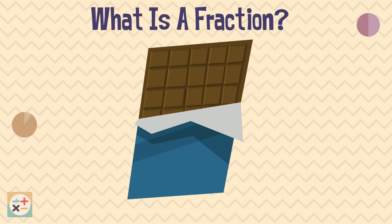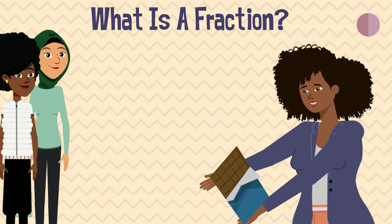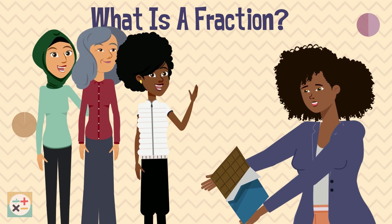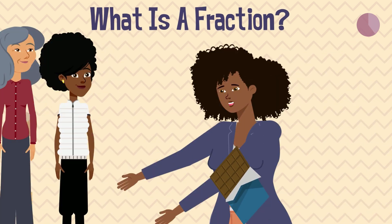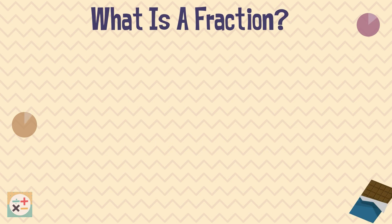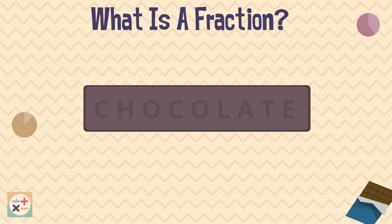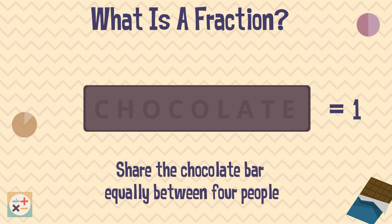Let's imagine you have a chocolate bar and want to divide it into equal parts to share among your friends. The chocolate bar is a whole and therefore is equal to one. We are going to share this bar between four people, so we have to divide the chocolate bar into four equal parts. We have divided the bar into quarters.